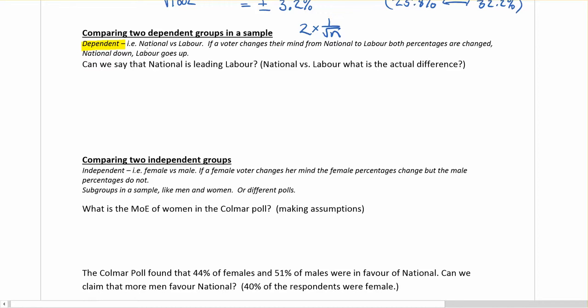Dependent events, you'll have to make a decision when you're doing the test about the difference between an independent and dependent event. The difference here is if we're comparing male to female voters, if a female voter changes her mind, the male percentage hasn't changed, so it's completely independent. The two groups we're comparing, male and female, if one of them has a slight change, it doesn't actually affect the other one, so it's an independent event.